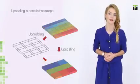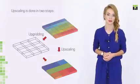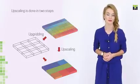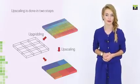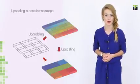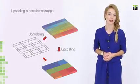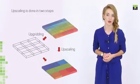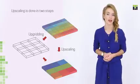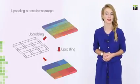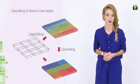Upscaling is done in two steps. The first step is upgrading, that is, combining fine-grid cells into coarser one. Cells are combined based on similarity of certain properties. There are various automated methods implemented in modern commercial simulation software.